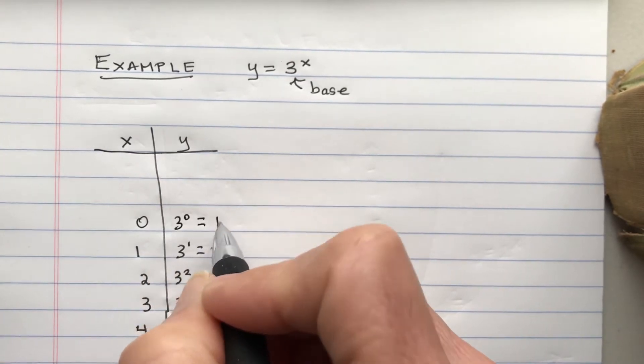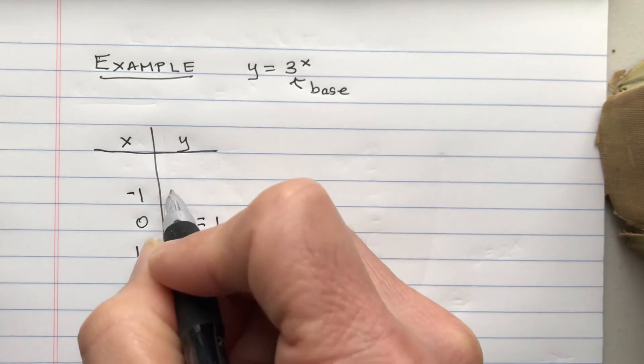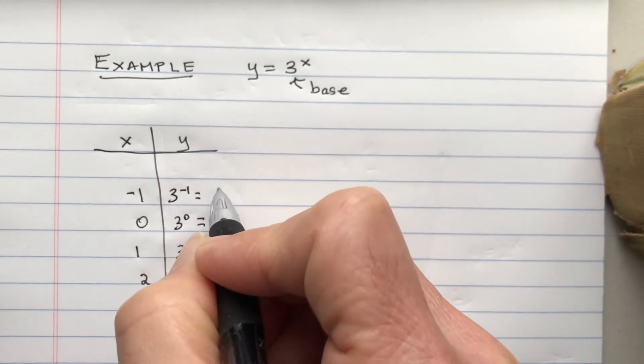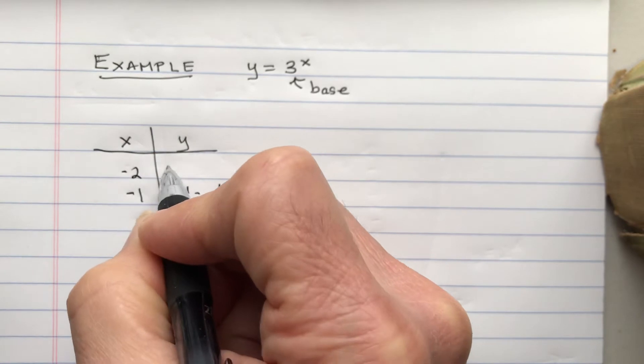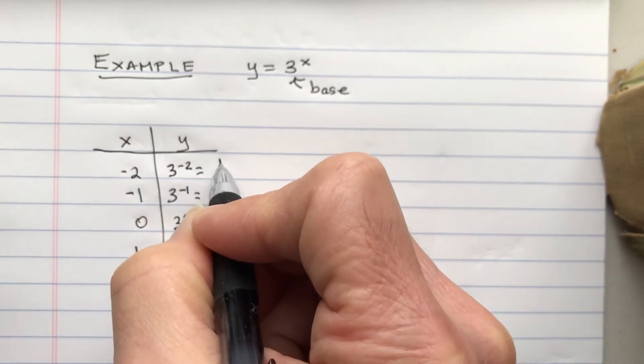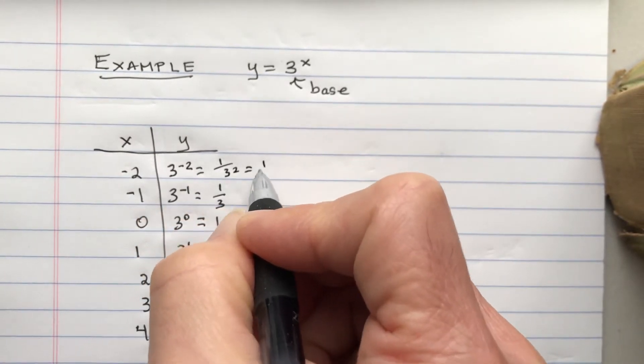3 to the 0 is equal to 1. Divide by 3 again. 3 to the minus 1 is 1 over 3. 3 to the minus 2 is 1 over 3 squared and that's 1 ninth.